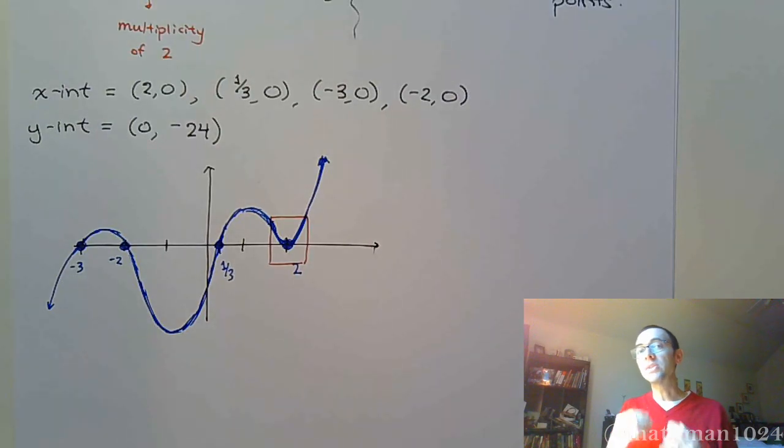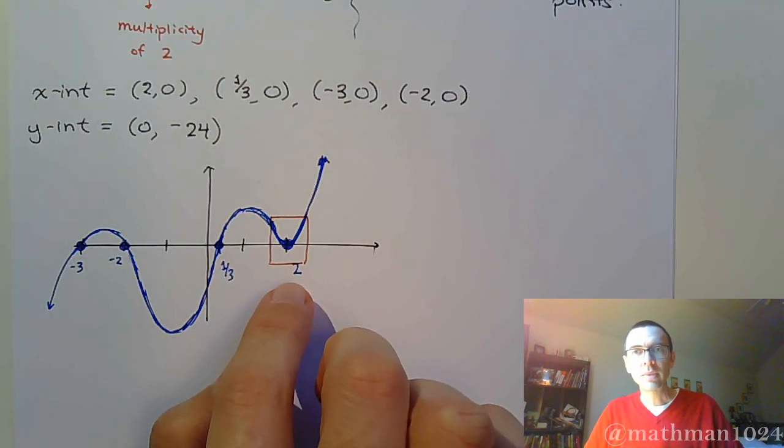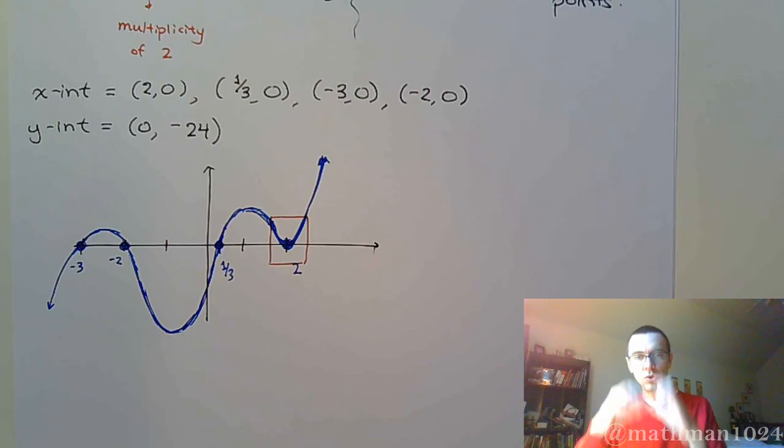It bounces like a parabola because the factor that contributes and gives us 2 is a squared factor. So when you zoom in, he looks like a square, like a parabola.